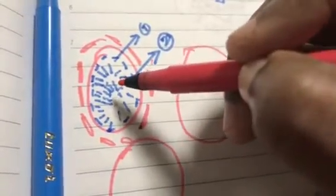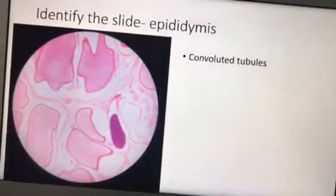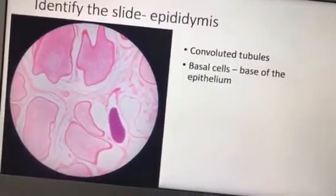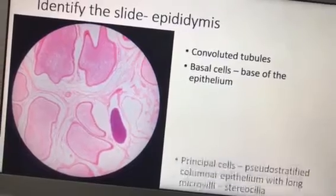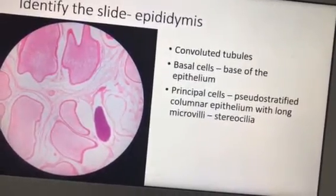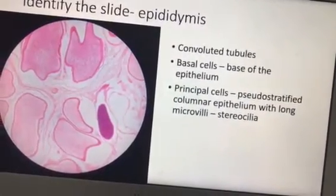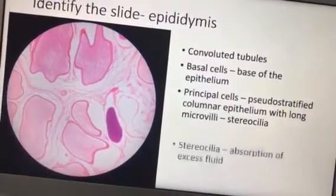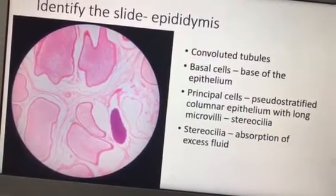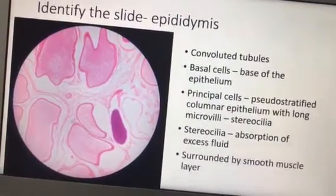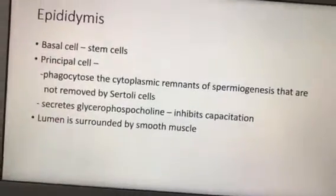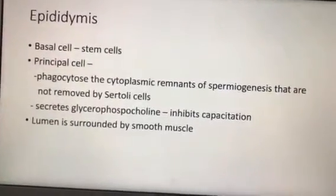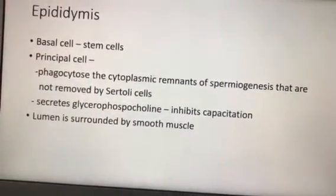So the four key points are: number one - basal cell; number two - principal cell; number three - stereocilia; number four - smooth muscle. You can see the convoluted tubules, basal cells at the base of the epithelium, and principal cells as pseudostratified columnar epithelium with long microvilli called stereocilia, which absorb excess fluid, surrounded by a smooth muscle layer.